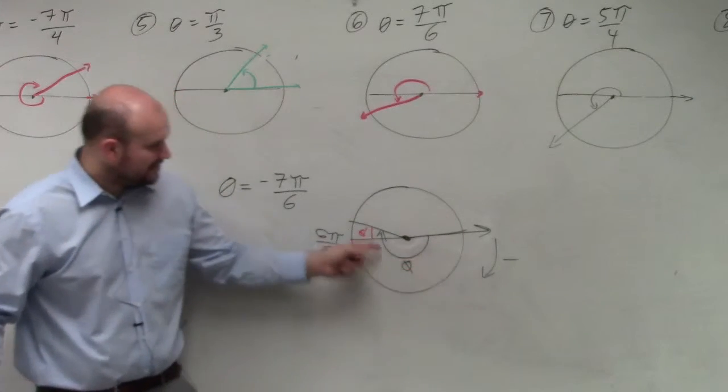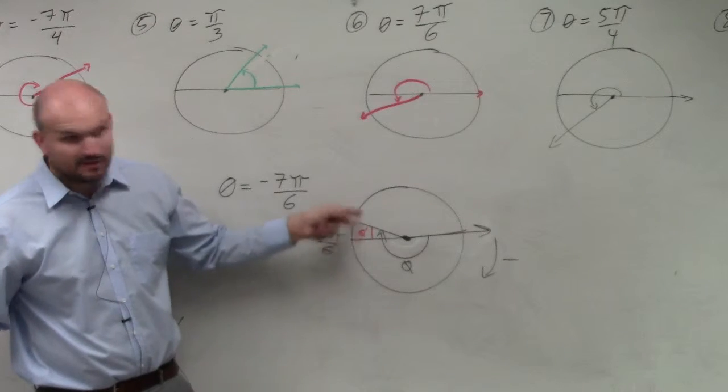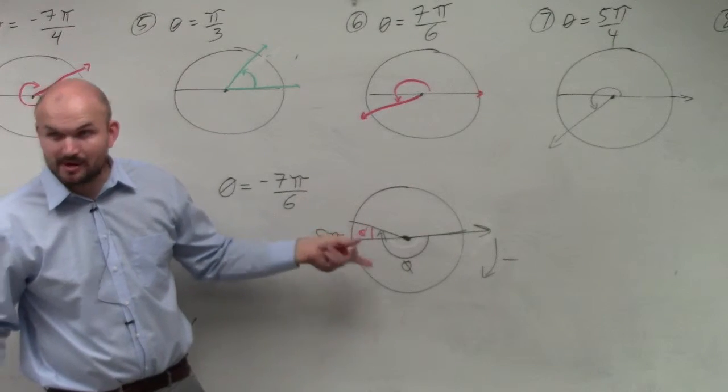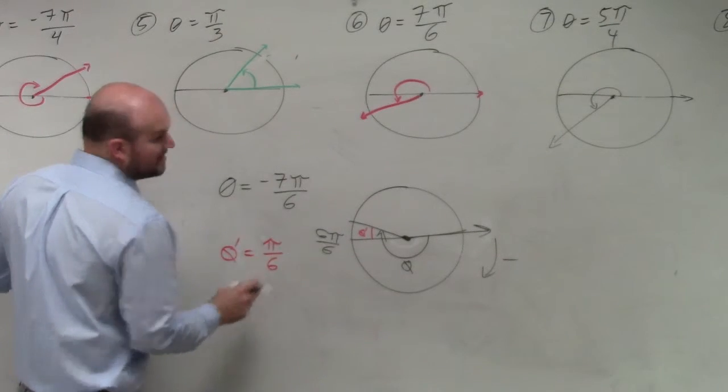Well, if halfway around a circle was 6 pi over 6, and I went up to 7 pi over 6, what is that little sliver that I had to go? That's my theta prime, just pi over 6. So theta prime is pi over 6.